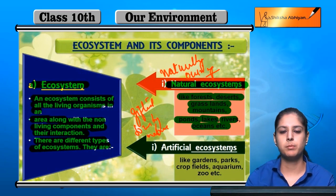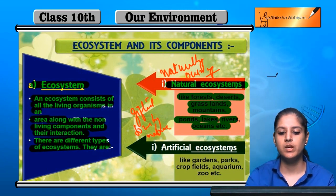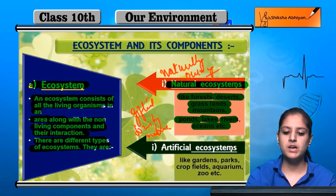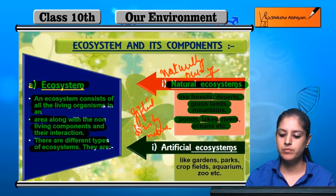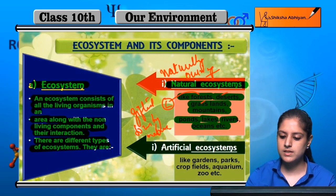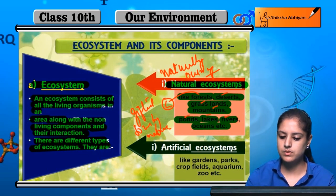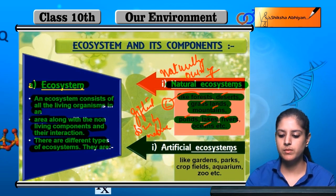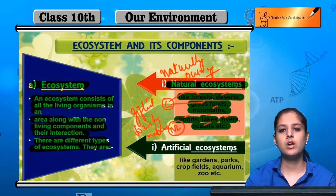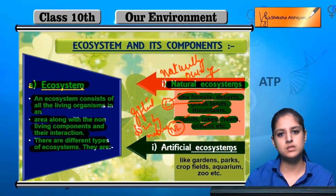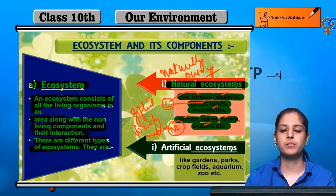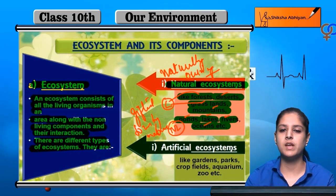There is no role of man; human beings have not done anything — this already exists from nature. Forests and grasslands are living factors, while deserts, mountains, ponds, lakes, rivers, and oceans are non-living factors. Because all of these coexist together and are all natural things, they form a natural ecosystem.